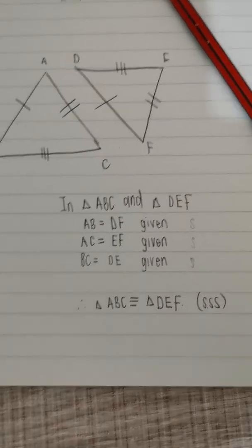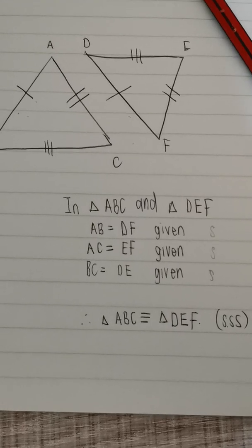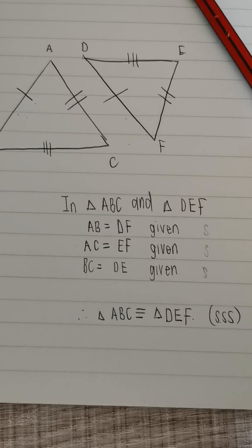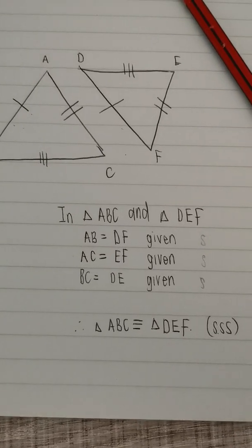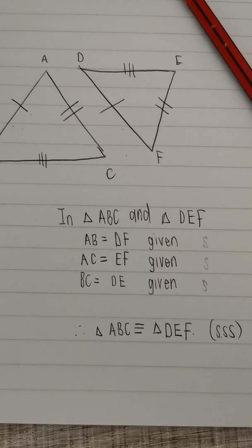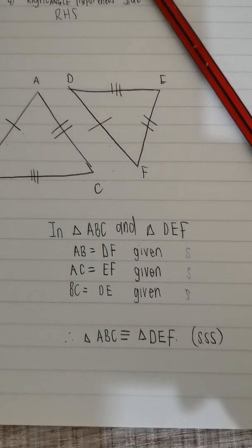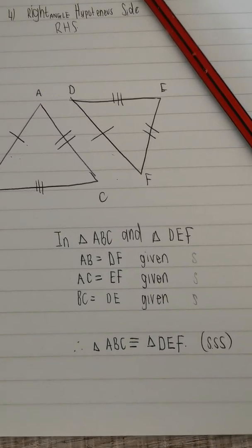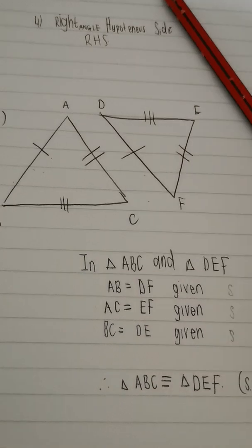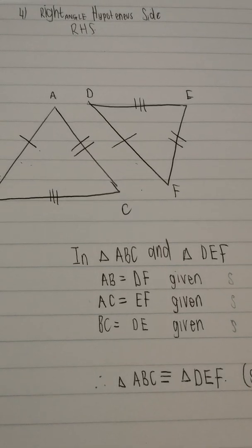Sometimes they give you the equal sides with symbols; other times they give you actual lengths. Other times you might need to use properties of quadrilaterals — like opposite sides being equal — to identify the sides. Make sure you know all your geometry properties so this section is easier to understand. I'm going to make separate videos for each congruency property, and a separate video on the most difficult exam-type questions so you know how to approach them.